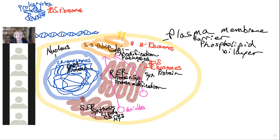The Golgi mixes and matches raw elements — lipids, carbohydrates, proteins, nucleotides — snapping things together. At the end, the finished product may get shipped to the plasma membrane, back to the ER, or sent to the nucleus. These vesicles can go all over the cell.